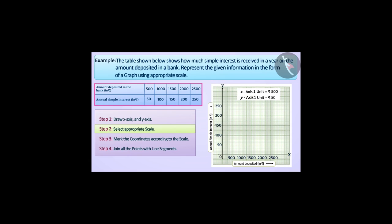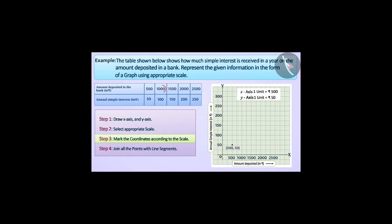It is known from the table that the highest annual simple interest is Rs 250, so we will end the annual simple interest on the y-axis at Rs 300. Now we will mark the coordinates according to the scale. Annual interest is Rs 50 for the deposited money Rs 500, so we will move 1 unit to the right on the x-axis and then 1 unit upwards, and mark the point at coordinates (500, 50). For the deposited money Rs 1000, the annual interest is Rs 100, so we will move 2 units right and 2 units upward and mark the point at coordinates (1000, 100).